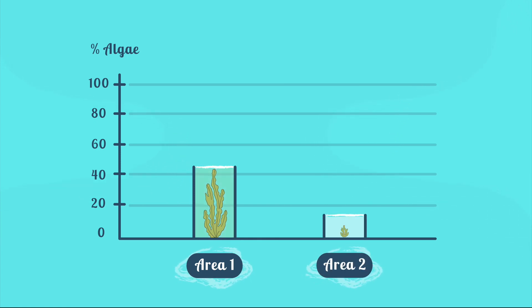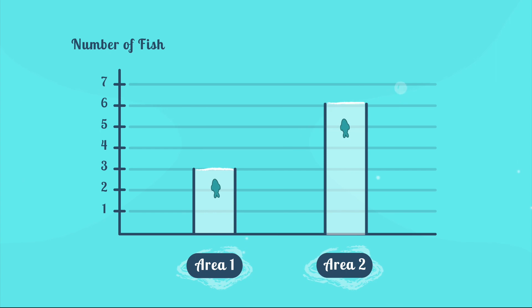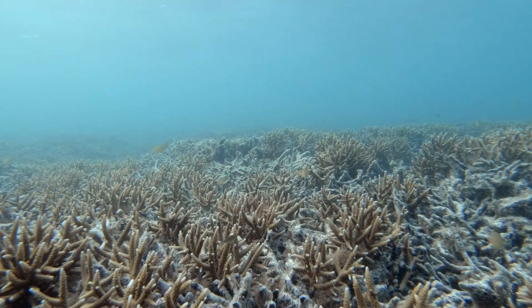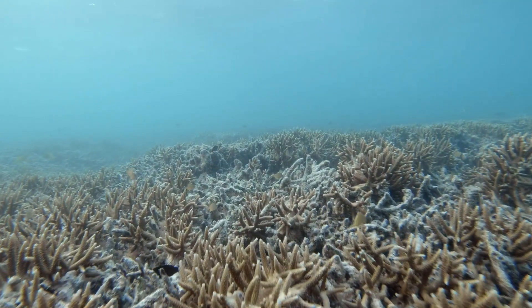We can also see that area number one had fewer fish than area number two. So there aren't as many fish in area number one to eat the algae and prevent the algae from taking over and killing the reef. This is a clue or a piece of evidence that our hypothesis might be correct.